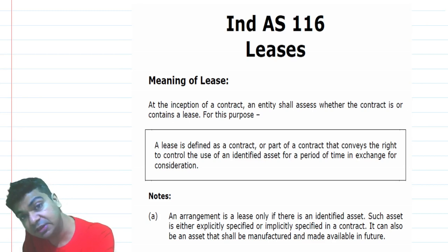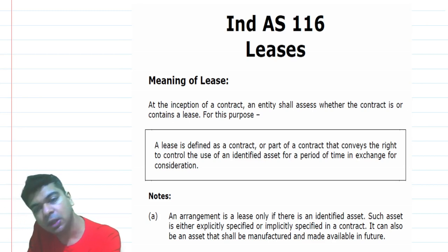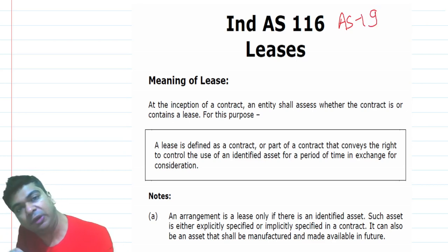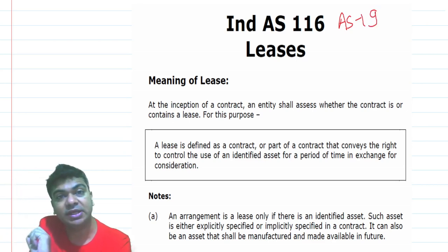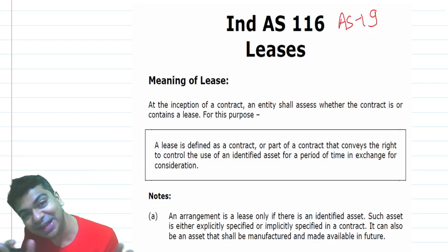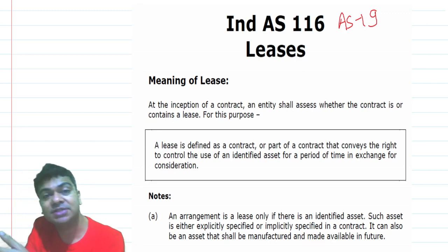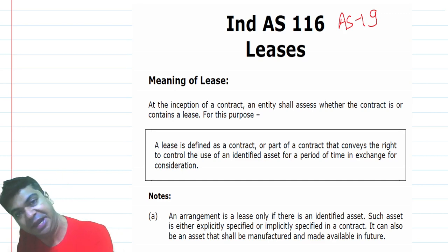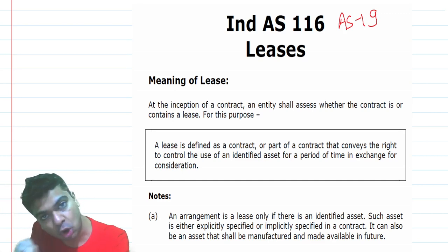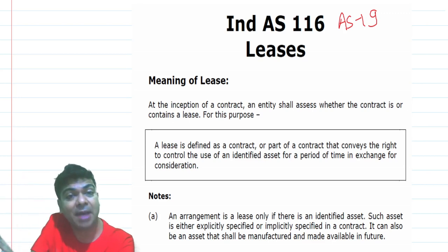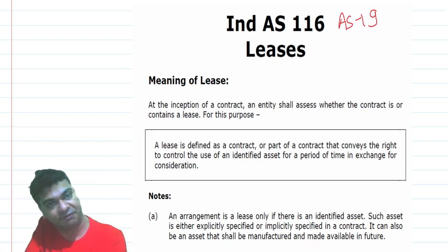Comparing with our regular accounting standards, we have Accounting Standard 19, also titled Leases. But that is where the similarity really ends. AS 19 is modeled on International Accounting Standard 17. Earlier we had Ind AS 17, which has now been withdrawn and superseded by Ind AS 116 Leases. The title is only comparable; otherwise the accounting treatment is very different.